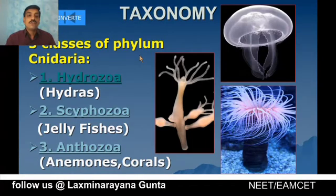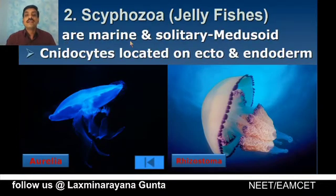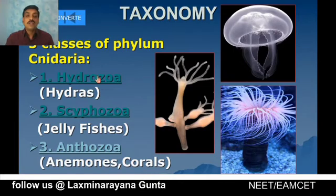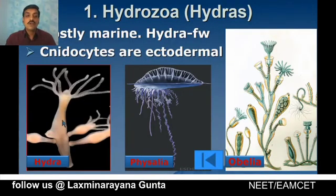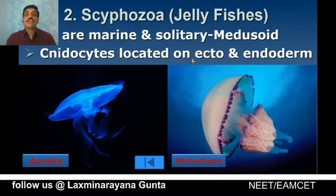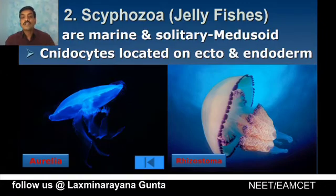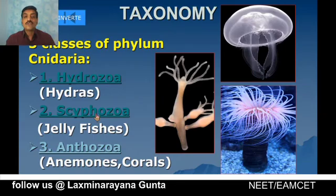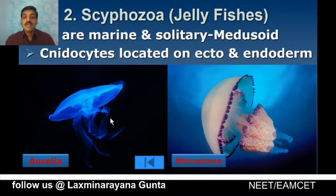Scyphozoa includes jellyfishes. All are marine and solitary, leading individual modes of life. All are medusoid forms — unlike Hydrozoa where both medusoid and polypoid forms exist, in Scyphozoa all are medusoid. Cnidocytes are located on both ectoderm and endoderm, unlike Hydrozoa where cnidocytes are on the ectoderm only. Examples are Aurelia and Rhizostoma.